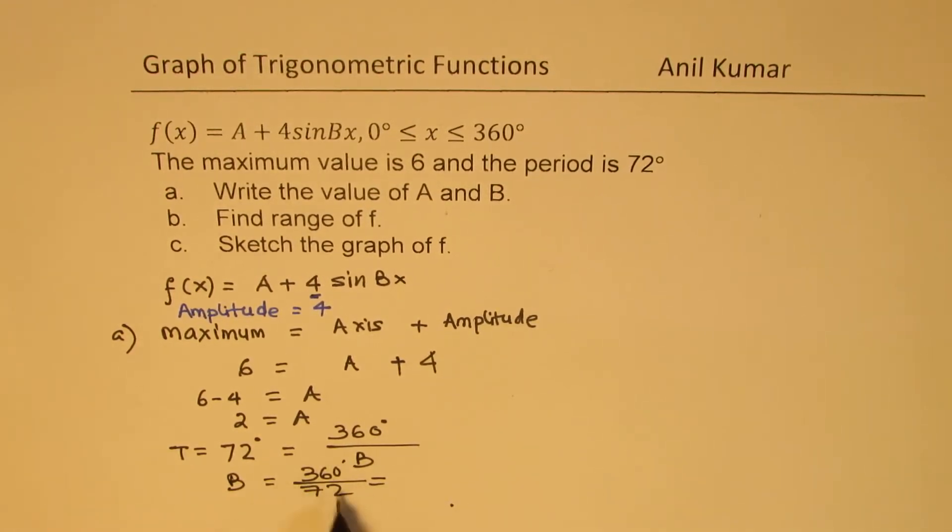So, we can find what B is. B is 360 degrees divided by 72. So, when you divide 72 into 360, what do you get? We get 5. So, 5 times 2 is 10, 35, so B is 5.